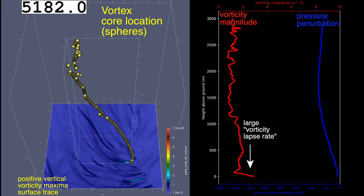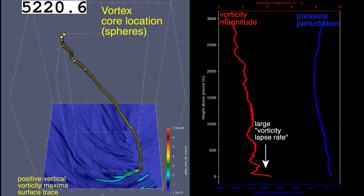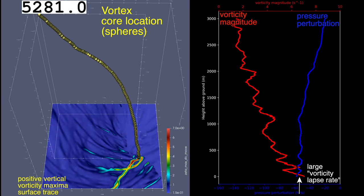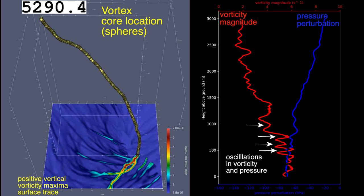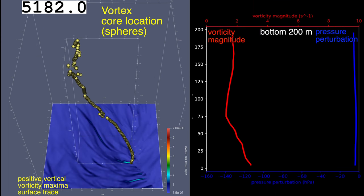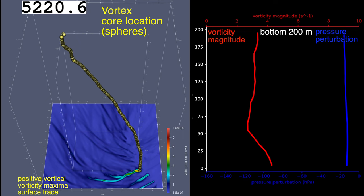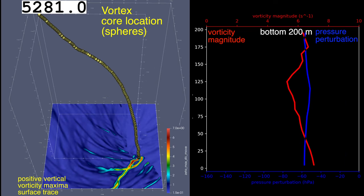These vorticity lapse rates — I don't know what to really call them, but they're interesting. They occur periodically, sort of sporadically, and seem to be associated with some of these oscillations that occur later on. Here's the same views looking at only the bottom 200 meters. The vertical grid spacing is 10 meters, as is the horizontal grid spacing, so this isn't a first-grid-point-over-the-ground problem that you sometimes run into with numerical models.